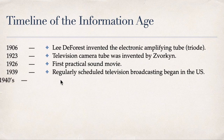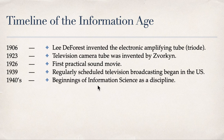In the 1940s, information science began as a discipline. We now have courses like Bachelor of Science in Information Systems and Information Science, because it became a separate discipline beginning in the 1940s.